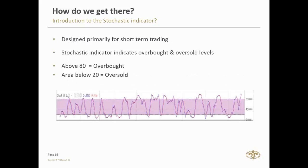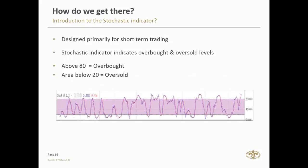We can see from the chart that above 80 is usually our overbought level, and below 20 is our oversold level — this is usually where it turns. The stochastic measures relationships between the close, high, and low, plotted on a scale of 1 to 100. The value of the stochastic is the position of the closing price in percentage terms relative to the high and low of the trading range.